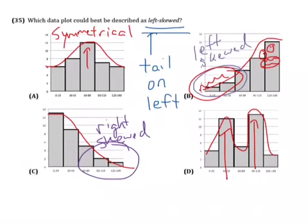So, if the tail is over on the left side, it's left skewed. If the tail is on the right side, it's right skewed. That's all. Beautiful.